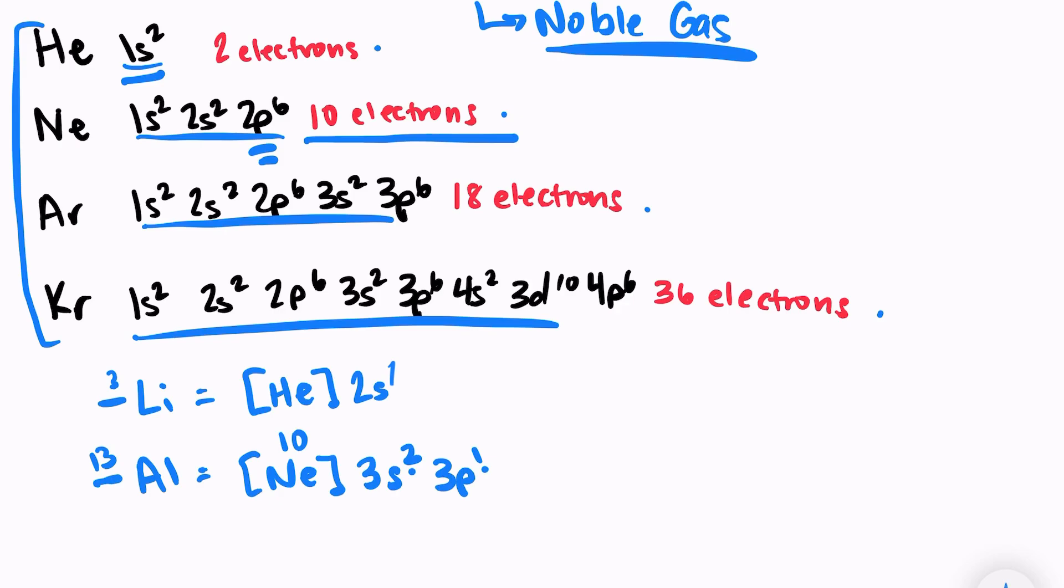Let's try nickel. Nickel has 28 electrons in it, so I can use argon's electron configuration. So I'll write Ar in brackets. And that took up 18 of my electrons. Argon ends with 3p, which means I need to start with 4s. 4s can hold two electrons.